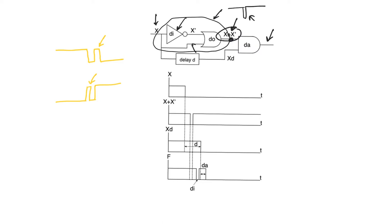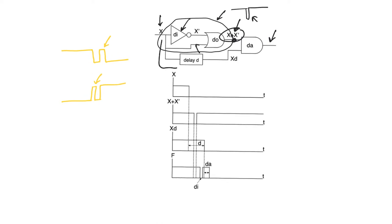This static hazard does not appear at the final output node of the circuit — it appears at an internal node. For a dynamic hazard to appear, there also has to be a third path for the variable through the circuit. This third path is the lowermost path in this diagram, and it has to have a longer combinational delay than the path containing the static hazard at the top.